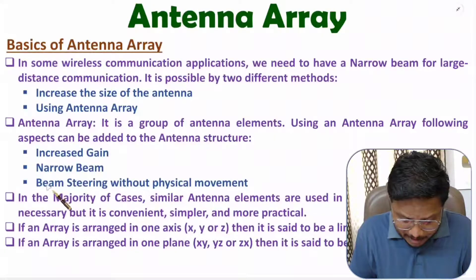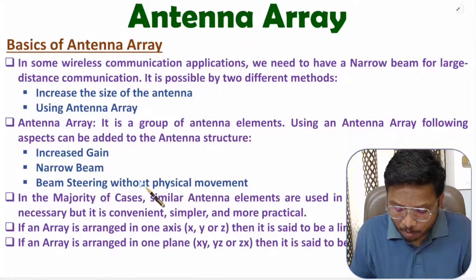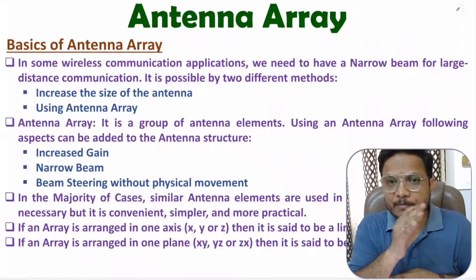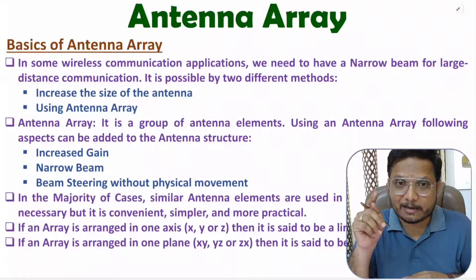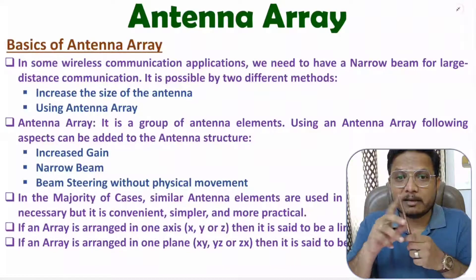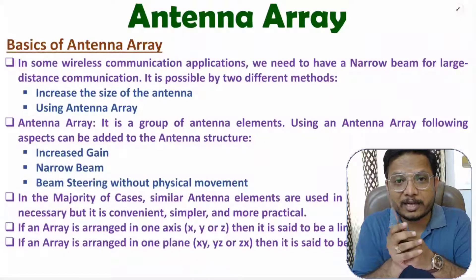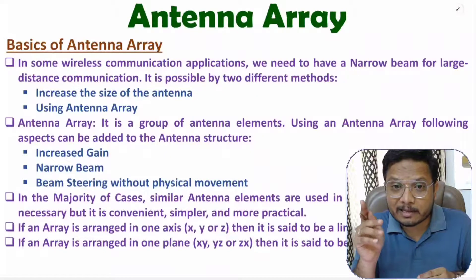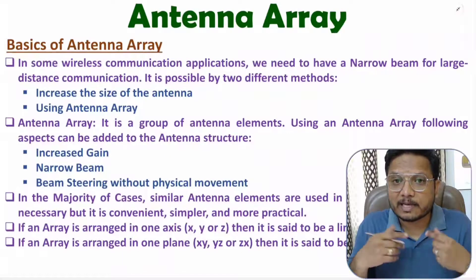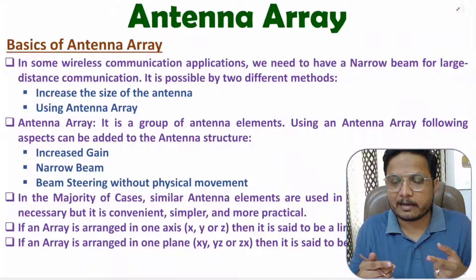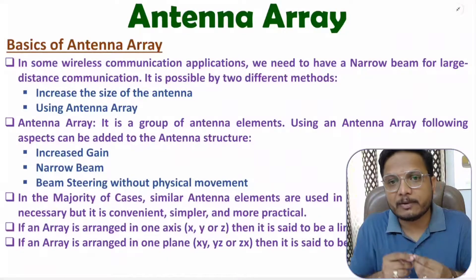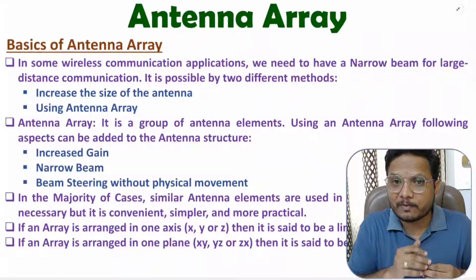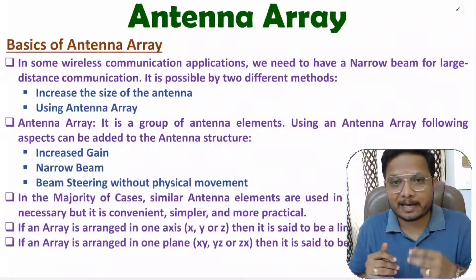A third advancement can be beam steering without physical movement. In applications like radar, we need to have steering of the beam. If we want to track a target that is in motion, then the antenna beam needs to be steered towards the target. With the use of antenna array, we can steer the beam of the antenna without physical movement of the antenna. That is possible by having a phase difference between elements. So, if we can steer the beam towards the target without physical movement, then we can use antenna array in radar systems.